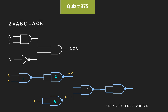After the first NAND gate we get (AC)̄, and the second NAND gate acts as an inverter, giving us AC. Likewise, after the third NAND gate we get B̄. When that is passed through the fourth NAND gate we get (AC·B̄)̄, and when passed through the fifth NAND gate we get AC·B̄.